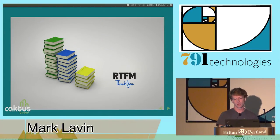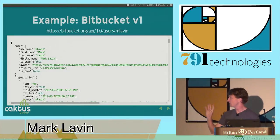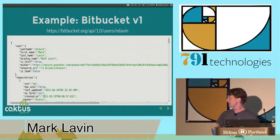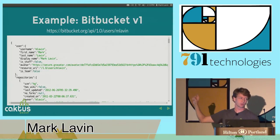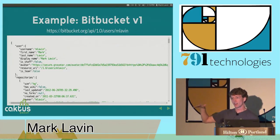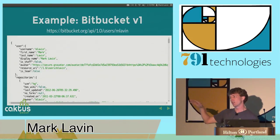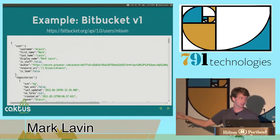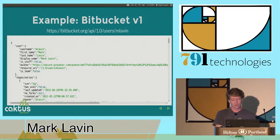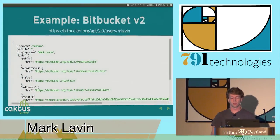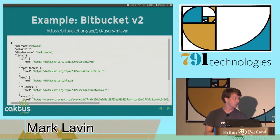Instead of relying on documentation, how do you build a discoverable API? Here's an example of a change that Bitbucket made. This is my Bitbucket profile on version one of their API. There's a tiny little section at the top which is my user profile information — what I asked for — and then a whole pile of information I didn't ask for: every repository I have, all the information about every repository, all the sub-information about forks. You can see the scroll bar showing how ridiculously long this response is, and I don't even use Bitbucket that much — I have like five repositories.